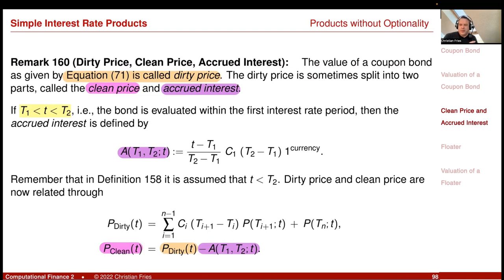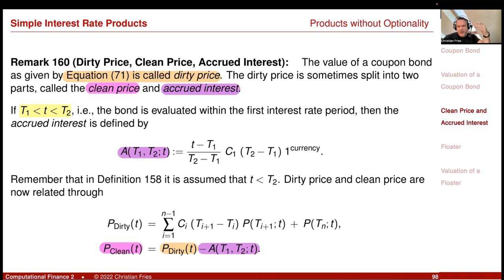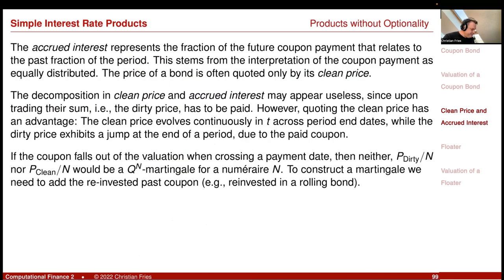Why do this? If you subtract this fraction, for t equals t_2 the coupon is fully removed from the clean price, while at the beginning of the period the whole coupon remains. This means the holder of the bond owns a fraction of the coupon corresponding to the time period that has elapsed. The accrued interest represents this fraction of the future coupon payment. For us as mathematicians this decomposition may be a bit useless, but let's look at a picture.